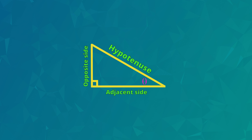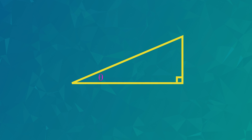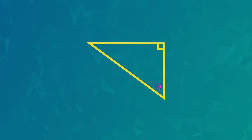Right-angled triangles come in all different shapes and positions, so let's practice these before we see the rules. In this right-angled triangle, the right angle and the theta angle have been marked. The hypotenuse is opposite the right angle — we write H. The opposite side is opposite the theta angle — we write O. The adjacent side is right next to the theta angle — we write A. In a second example, the hypotenuse is H, the opposite side is O, and the adjacent side is A.